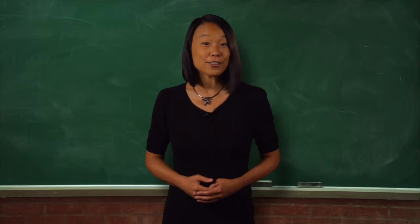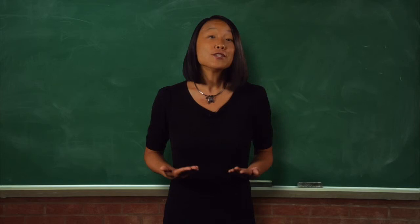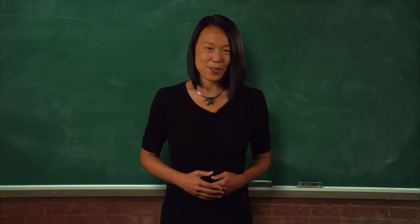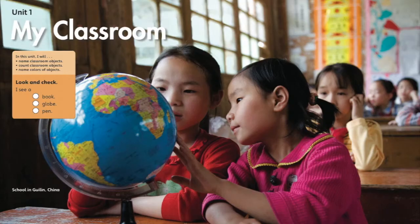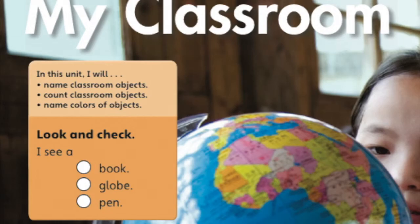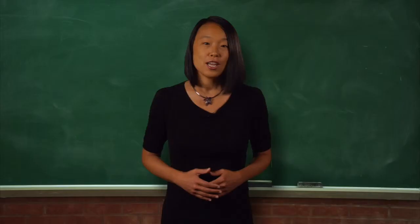Young learners should also learn how to self-assess. As a first step, start each unit by pointing out what your students will be able to do at the end of the unit. Our World lists the objectives in each unit opener. Take a look at the unit on My Classroom. It states: 'In this unit, I will name classroom objects, count classroom objects, and name colors of objects.'